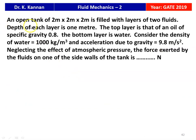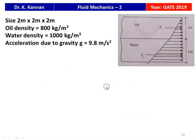The next question from the 2019 question paper: an open tank of 2 m × 2 m × 2 m is filled with two fluid layers each of depth 1 meter. The top layer is oil of specific gravity 0.8; the bottom layer is water. Density of water is 1000 kg/m³, g equals 9.8 m/s². Neglecting atmospheric pressure, find the force exerted by the fluid on one side wall. Two forces act: F1 for the oil layer and F2 for the water layer. Oil density is 800 kg/m³.